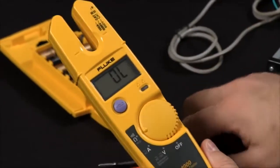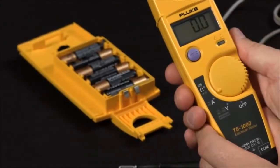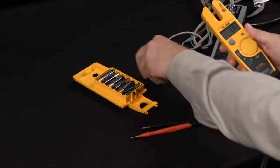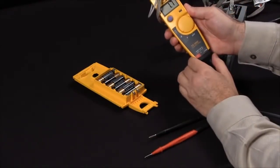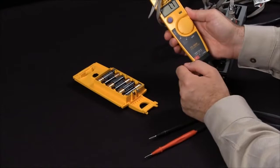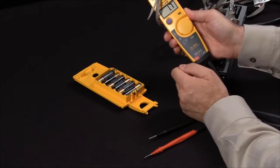To take a current measurement, simply move the dial position to measure current, and now you can slide your open jaw design around your current source. And right there, we're reading 1.7 amps AC.